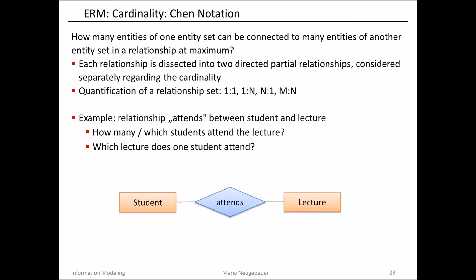The entity relationship model shown here contains two entity sets and the relationship set 'attends,' which is split into two directions: from student to lecture, and from lecture to student. We will see later why this is important.